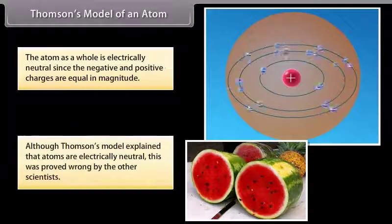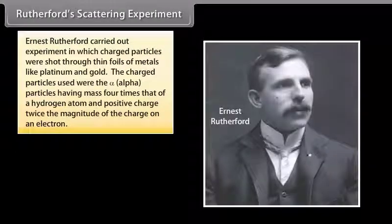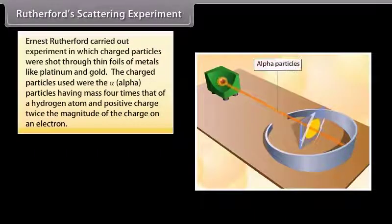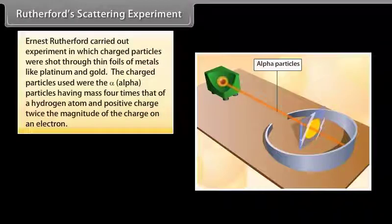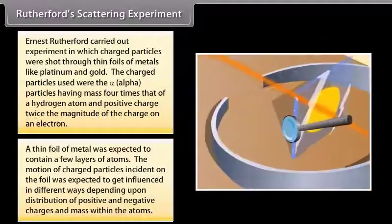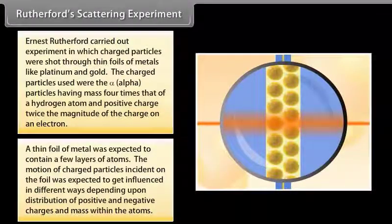Although Thomson's model explained that atoms are electrically neutral, this was proved wrong by other scientists. Ernst Rutherford carried out an experiment in which charged particles were shot through thin foils of metals like platinum and gold. The charged particles used were alpha particles, having mass four times that of a hydrogen atom and positive charge twice the magnitude of the charge of an electron. A thin foil of metal was expected to contain a few layers of atoms, and the motion of charged particles was expected to be influenced depending upon the distribution of positive and negative charges within the atoms.